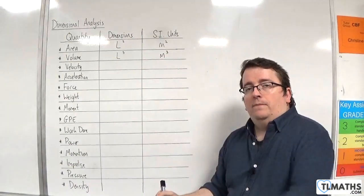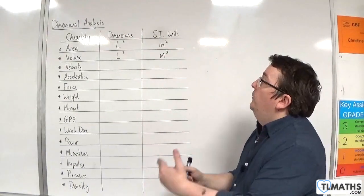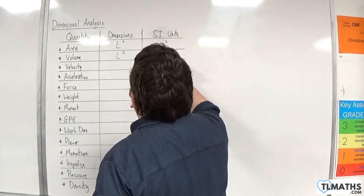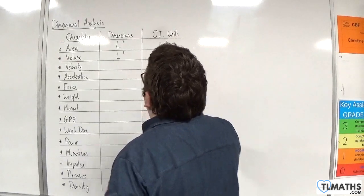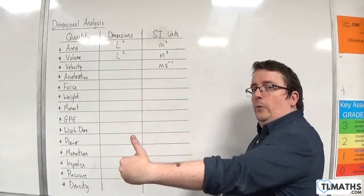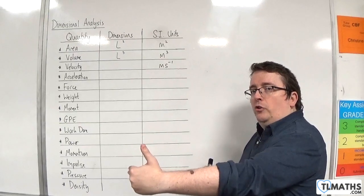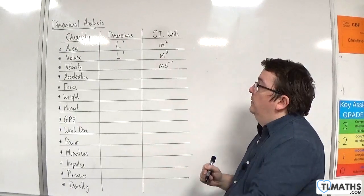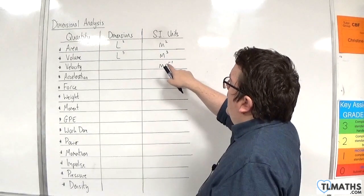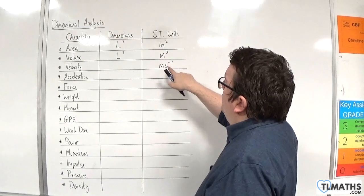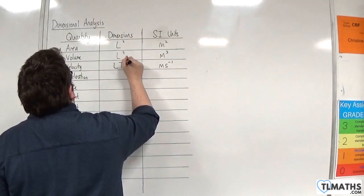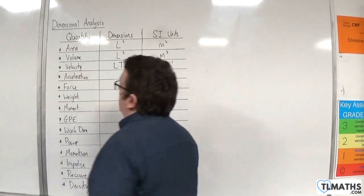A velocity would be metres per second. Sometimes you'll want to go to the SI units first, and then be able to identify the dimensions of the units. So, we've got a length and then time to the minus one — L, T to the minus one.